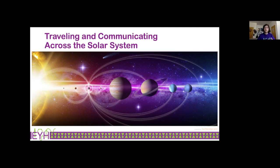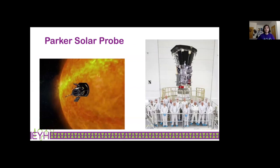We communicate with spacecraft using radio, which is a kind of light. Light travels at 670 million miles per hour, which is incredibly fast. To give you a sense, the International Space Station orbits Earth at 17,500 miles per hour — still incredibly fast. And the Parker Solar Probe, the fastest man-made object, travels at 435,000 miles per hour. Again super fast, but 670 million miles per hour for light is still way faster. So let's talk about how quickly light takes to travel between different planets and bodies of the solar system.